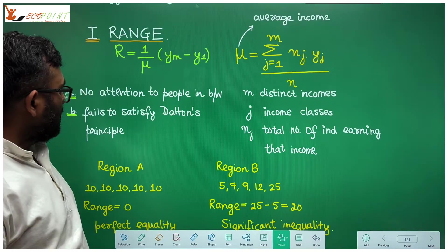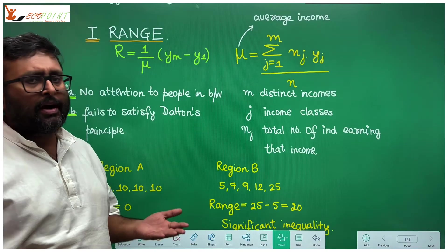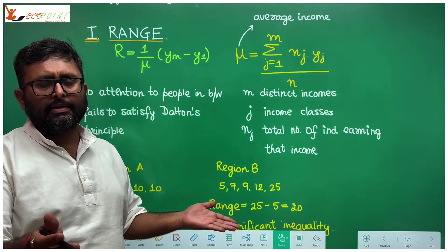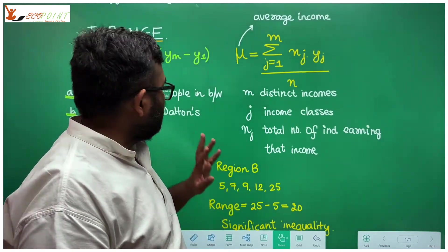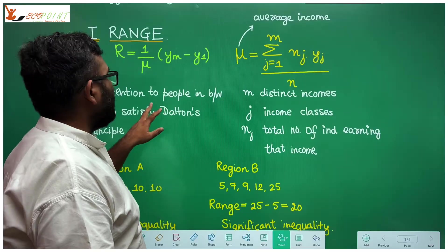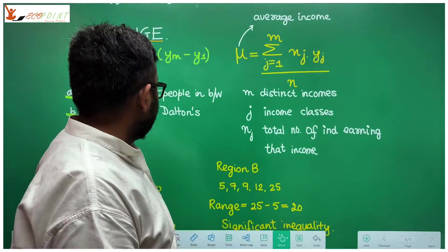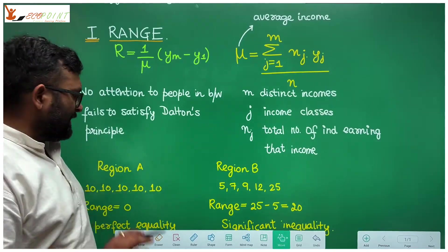Now the problem with the range is, range is just doing this: you have the income distribution and it is just telling you what is maximum minus minimum income. Now you tell me one thing. Is it giving any attention to people who are in between? I'll give you an example. And it also fails to satisfy Dalton's principle. We'll take up an example.